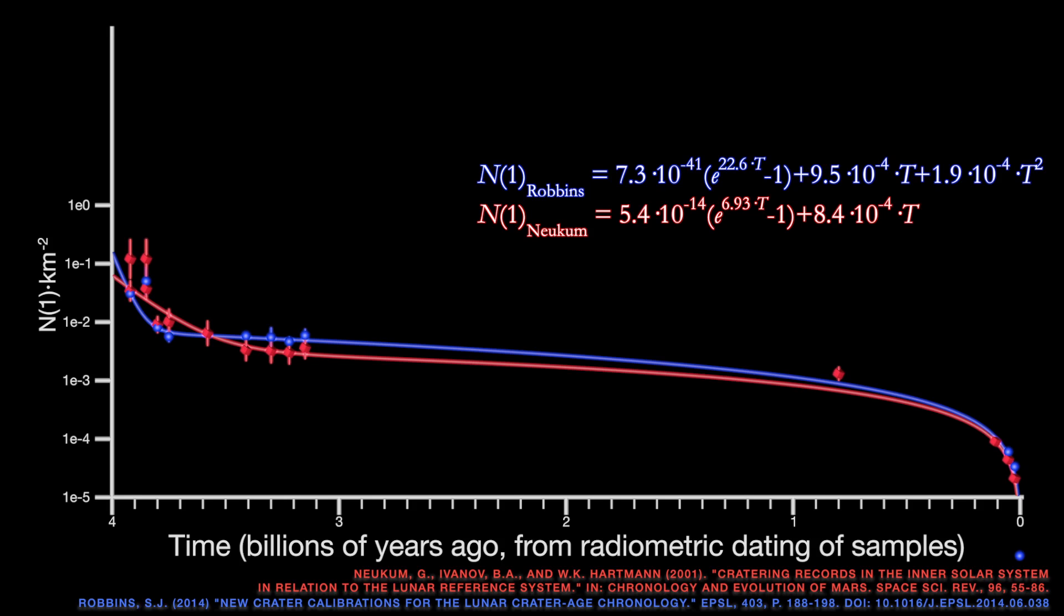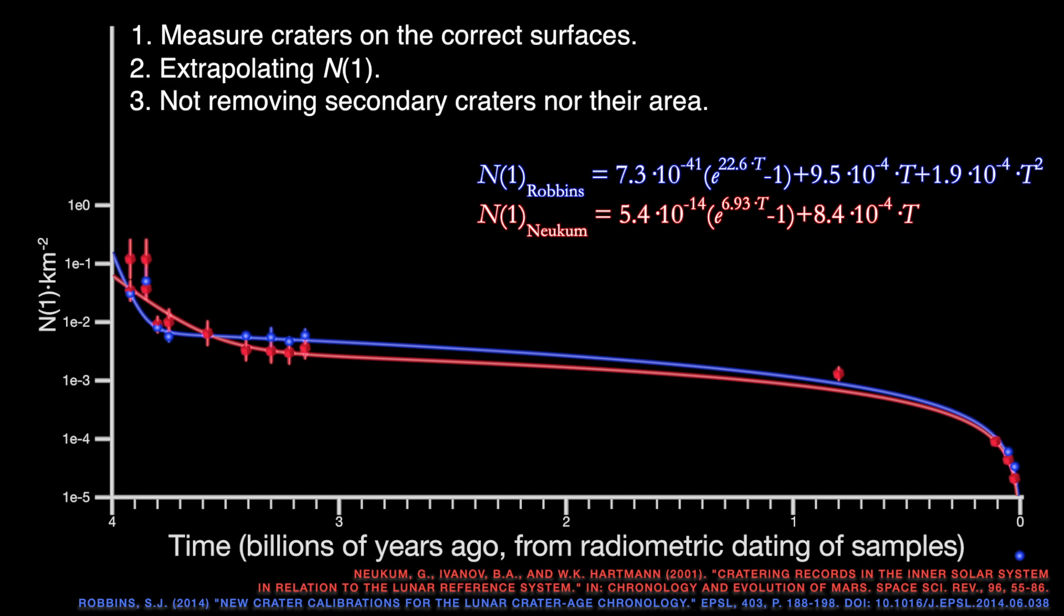There are four main reasons why my crater counts are different. One, earlier researchers did not always identify craters on the same surface that was sampled. Two, the N1 points were often extrapolated from larger or smaller craters based on models and not directly measured. While I couldn't fix all of that, I was able to measure N1 more directly than other people. Three, the area occupied by secondary crater clusters was not excluded in previous work, and when you're trying to measure a spatial density, you have to get the area correct. Four, poor quality images were sometimes used that limited the ability to identify craters.